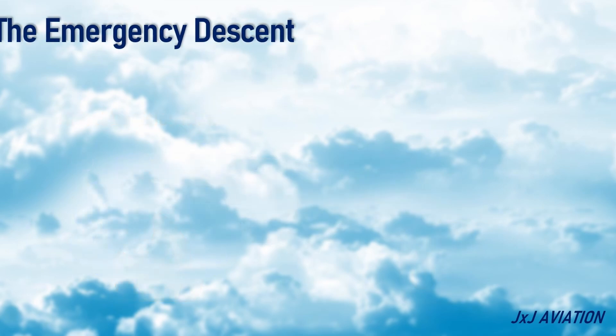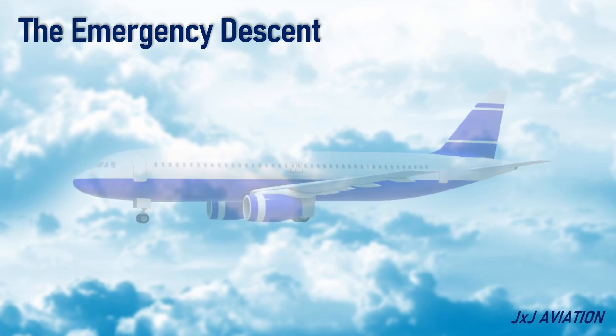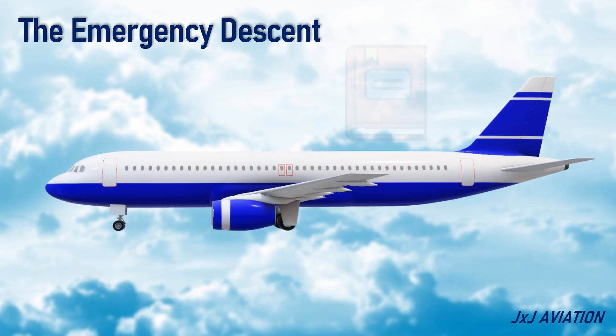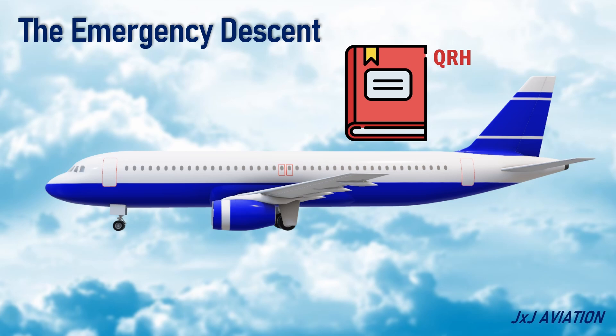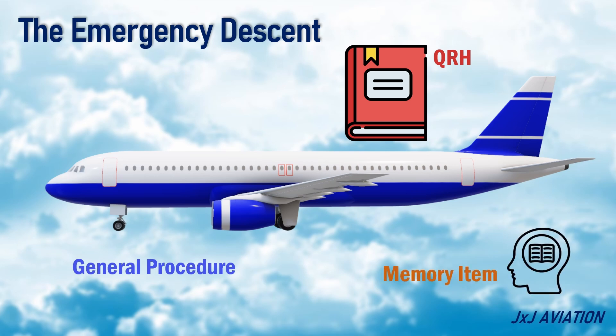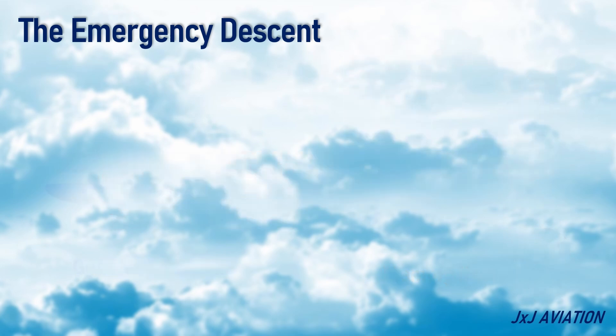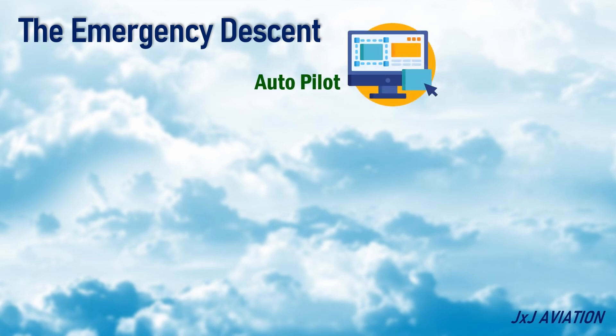Each aircraft has its own procedure for emergency descent, mentioned in the manufacturer documents. Here, for understanding purposes, we will look at a general emergency descent procedure. The emergency descent procedure is usually a memory item, which means it is to be directly applied from memory when required. On most modern aircraft, the autopilot is programmed for handling the emergency descent and can be used for the descent if it is available.